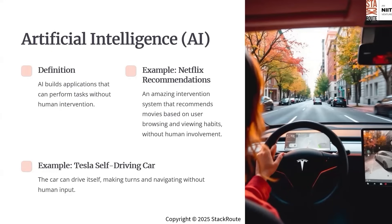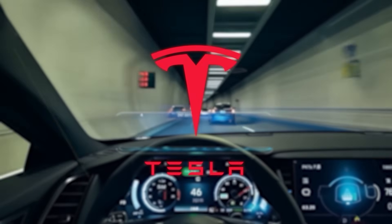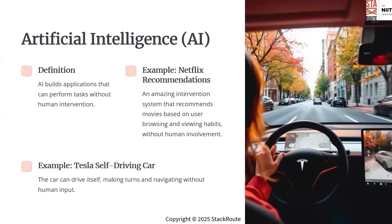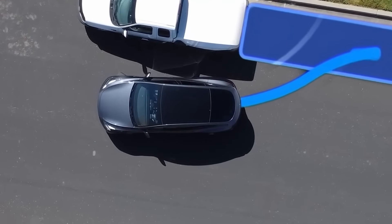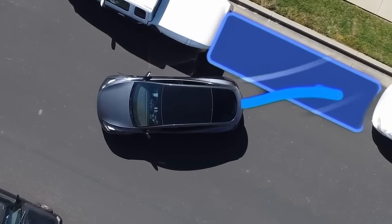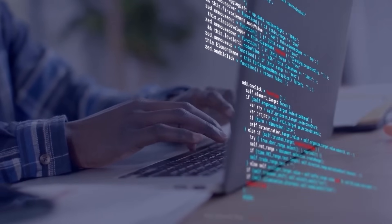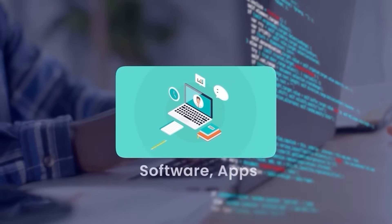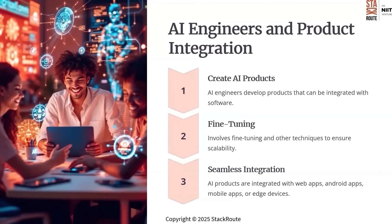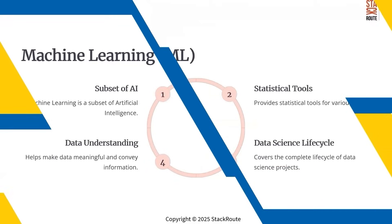Another great example is Tesla's self-driving cars. These vehicles can navigate, make turns and even park themselves using AI. Engineers are the brains behind these innovations. They design and integrate AI models into software, apps and even edge devices, making our lives smarter and more efficient. In short, AI is about creating systems that can operate independently and intelligently.